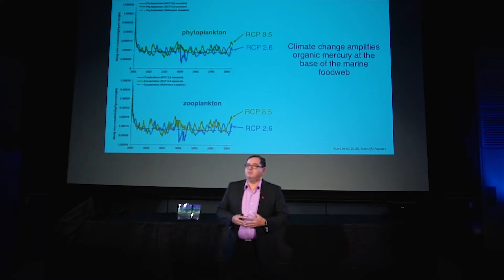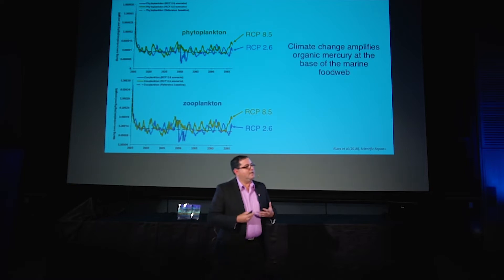We know that high levels of pH can change the speciation of some metals like methylmercury. And methylmercury is a potent neurotoxicant that is affecting fish and also marine mammals and even humans. To understand this process, we set up a model using ECOPATH and ECOSIM, a food web trophic model, to understand how climate forcing is affecting the bioaccumulation of this pollutant. I am going to show you now the example with methylmercury, because methylmercury is one of the most neurotoxic pollutants that we have today.